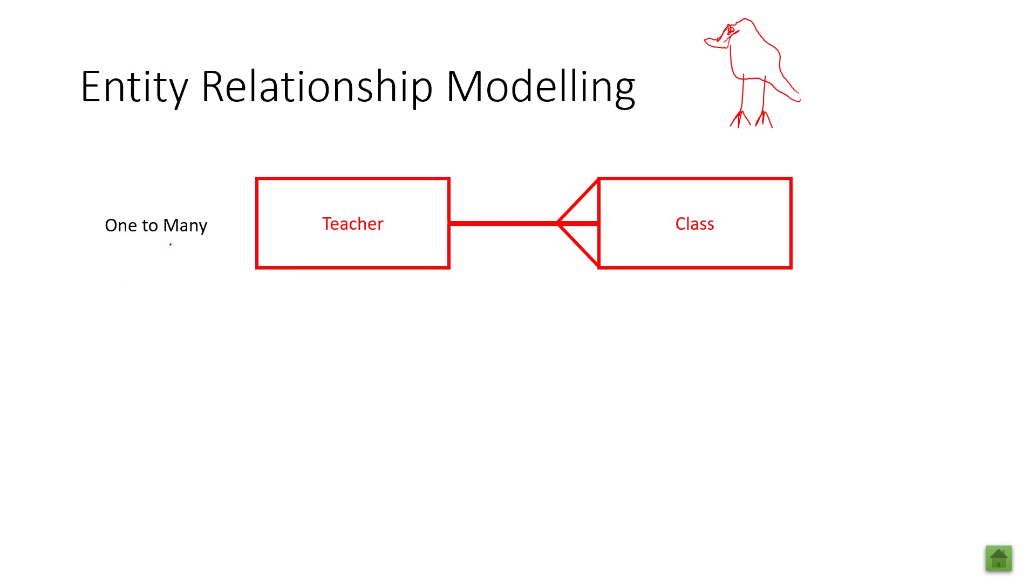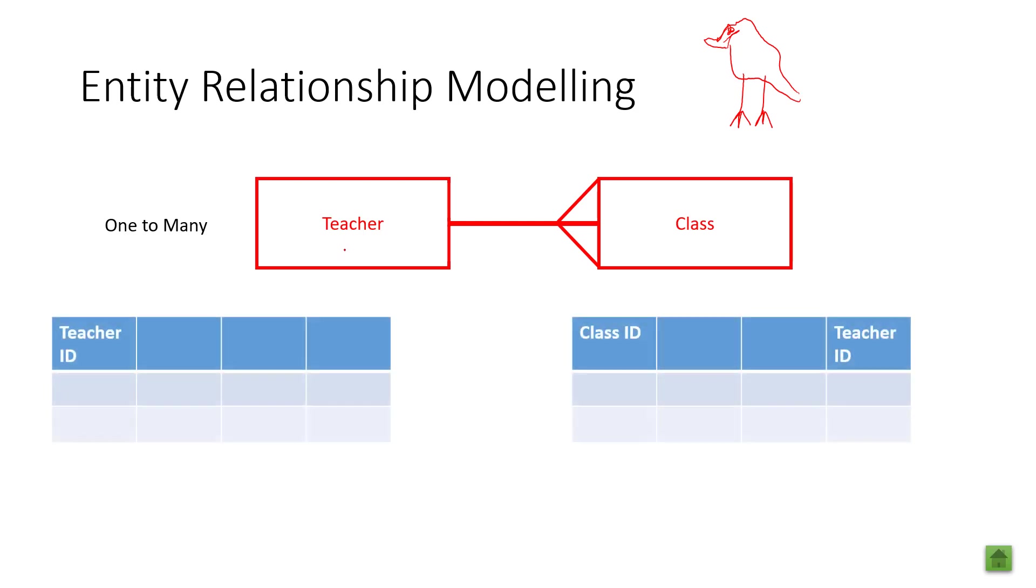In a one to many relationship, one teacher can have many classes. A class is taught by just one teacher. In our tables, we'd have the following. Here is our teacher table, which has a primary key of teacher ID. And this is our class table, which has a class ID.